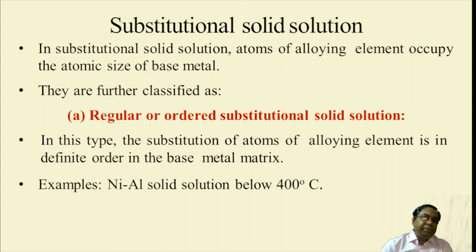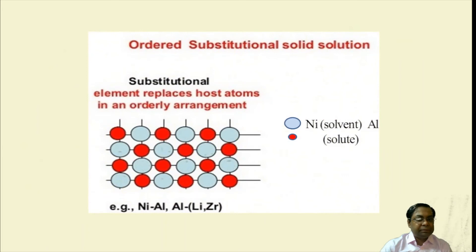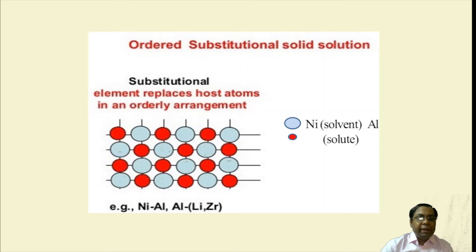In the regular or ordered type, the substitution of atoms of the alloying element is in a definite order in the base metal matrix. An example is the nickel-aluminum solid solution, which occurs below 400 degrees centigrade. In ordered substitutional solid solution, the nickel (solvent) and aluminum (solute) are homogeneously distributed.